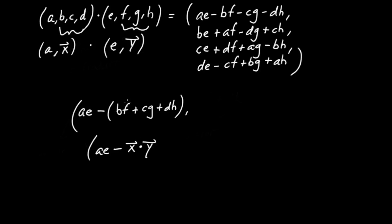So this is where the dot product comes from — isolating that triad of terms: minus BF, minus CG, and minus DH, and yanking out that minus sign. Having dealt with that scalar part, let's now take care of the new vector part that results when I take (A, B, C, D) and multiply by (E, F, G, H), or equivalently (A, x) times (E, y).